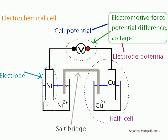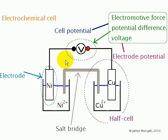The voltmeter records the voltage, which is also called the electromotive force, EMF, or potential difference. This comes about as each half cell has a different tendency to gain or lose electrons, and therefore one side of the voltmeter will be positive relative to the other.